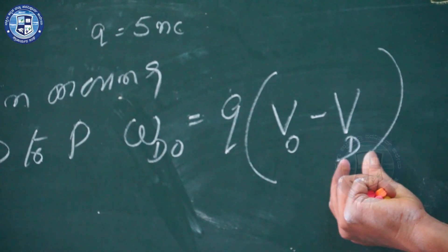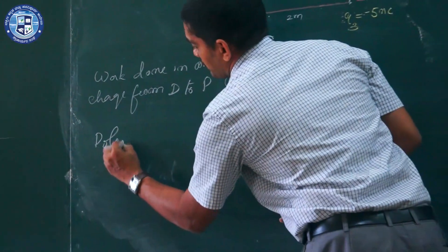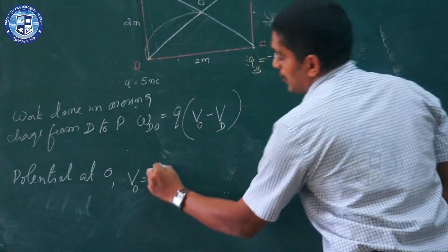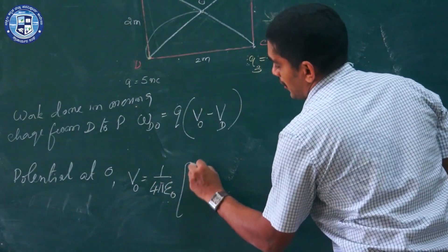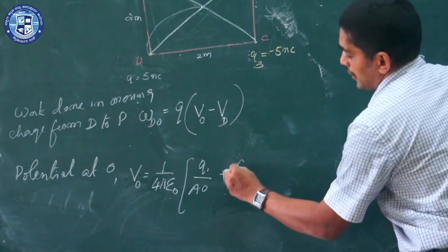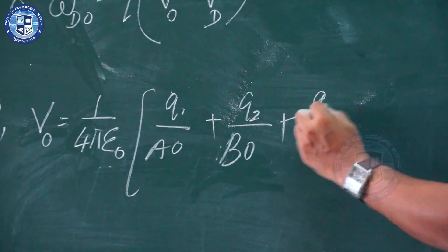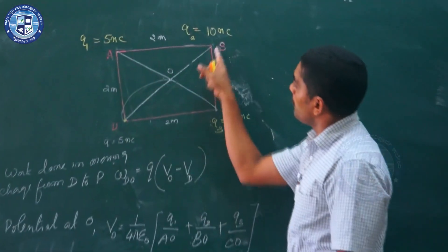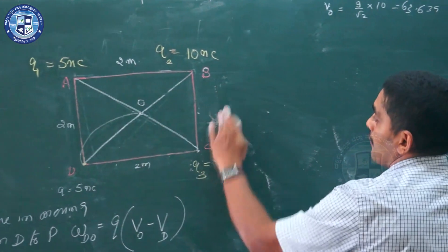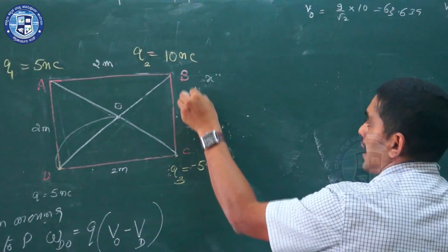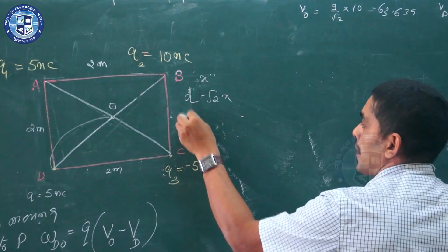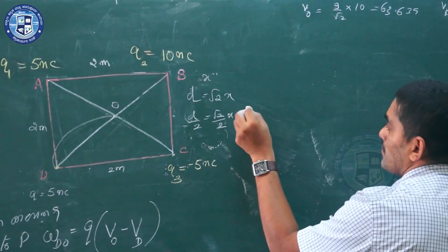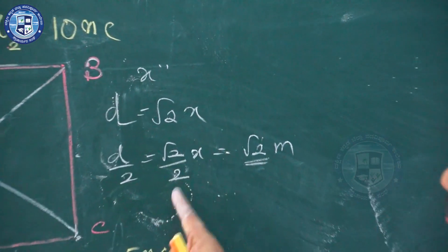Let us first find V_O, then V_D. The potential at O is: V_O = (1/4πε₀) × (Q1/AO + Q2/BO + Q3/CO). Now AO, BO, and CO are each half the length of the diagonal. If the side of the square is X, the diagonal is √2 × X, so half the diagonal is (√2/2) × X. With X = 2 meters, the 2s cancel and AO = BO = CO = √2 meters.